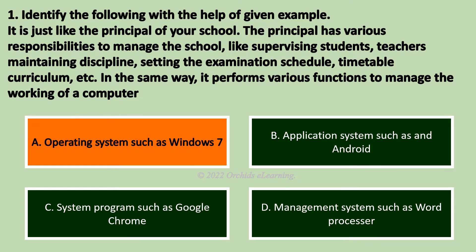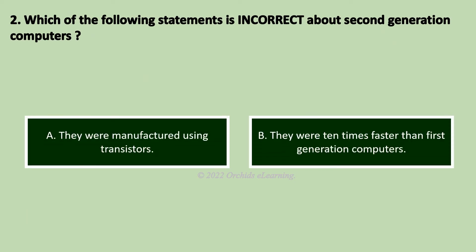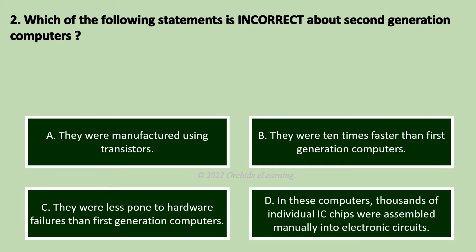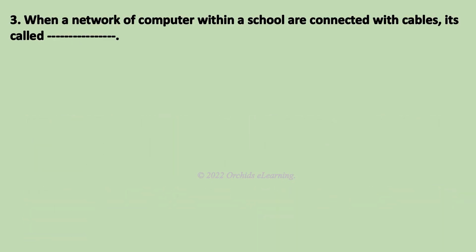An operating system such as Windows 7. Which of the following statements is incorrect about second-generation computers? Answer D: In these computers, thousands of individual IC chips were assembled manually into electronic circuits.